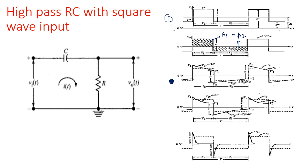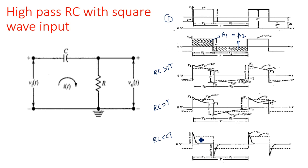Three cases arise: first, RC is very much greater than the input signal period T; second, RC is comparable to T; and third, RC is very much less than T. When RC is much greater than T, the capacitor takes very long to charge and discharge. When RC is much less than T, the capacitor charges and discharges very quickly. This leads us to the same calculation we performed for the low-pass RC circuit with a square input.